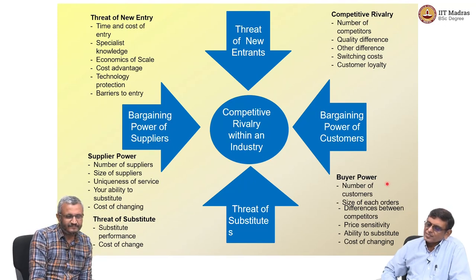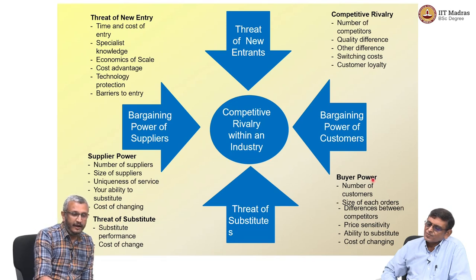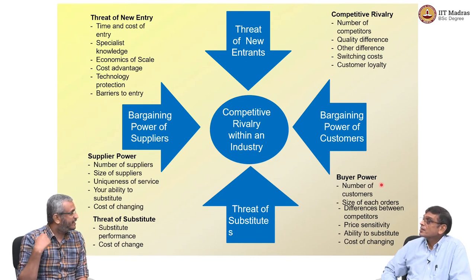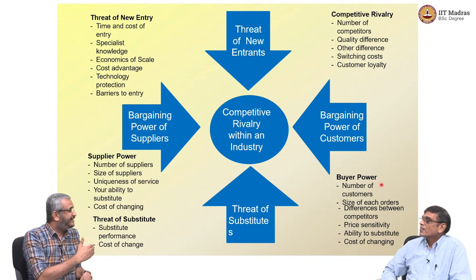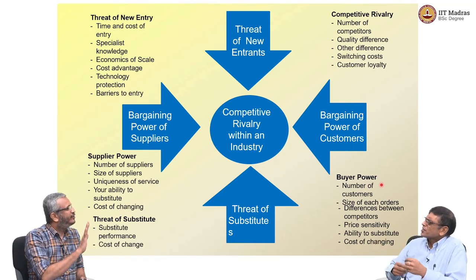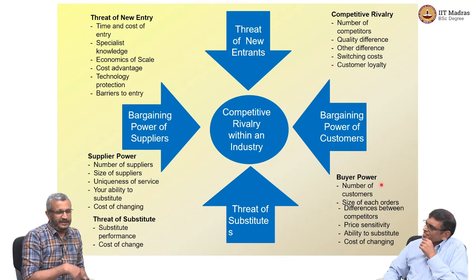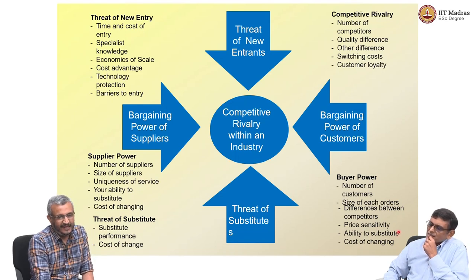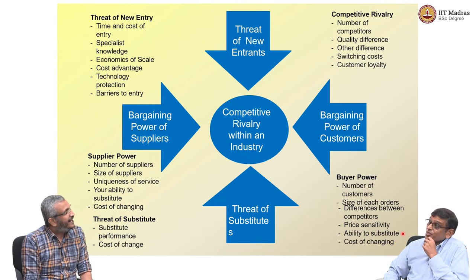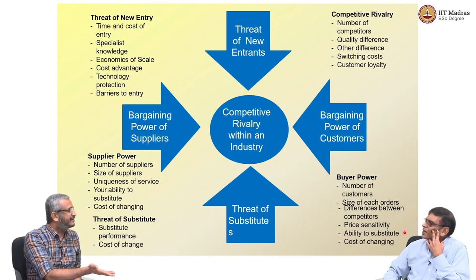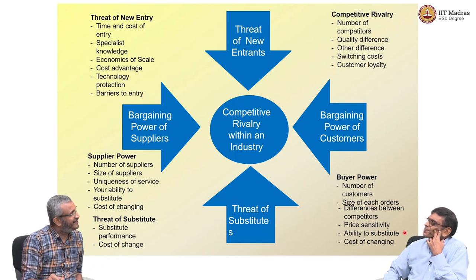In terms of bargaining power, the number of customers is very important. If you have very few customers, that customer will bargain with you. But if you have a large number of customers and one says no, you can look at another. The ability to substitute is also very important for the bargaining power of customers — if they find a close substitute to my product, they might bargain more and say they can get it cheaper elsewhere.